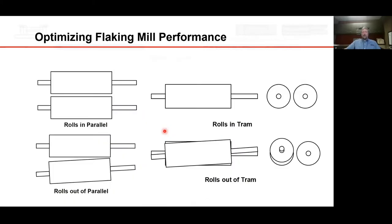Two conditions required to make uniform flakes: the rolls need to be in parallel — looking down on the rolls, they should be even from end to end. The rolls also need to remain in tram, meaning they are in the same plane, so that as you look directly at the rolls, they are in line.